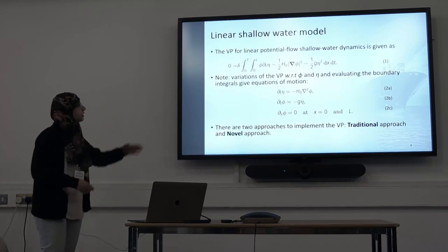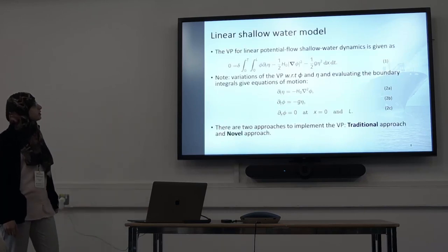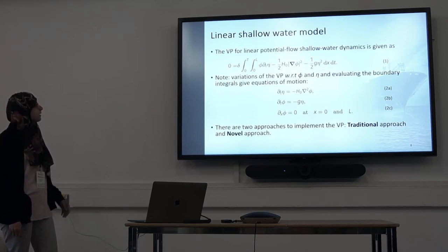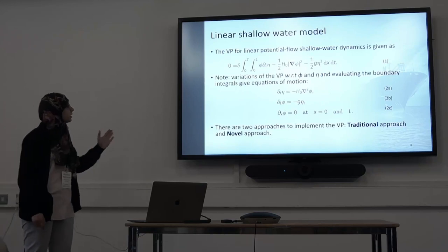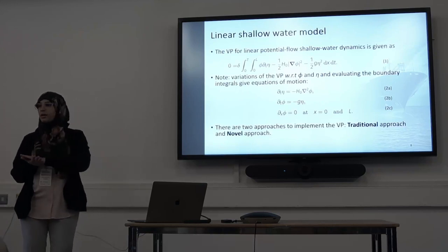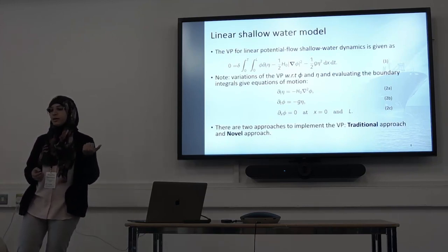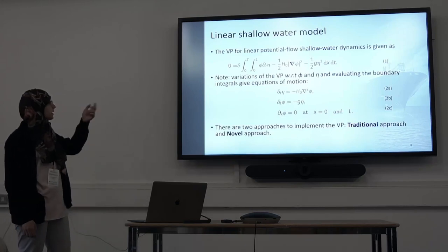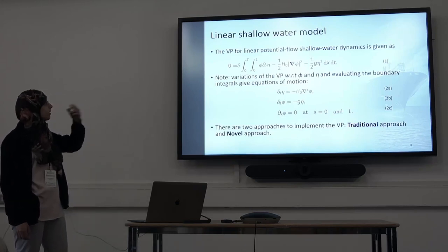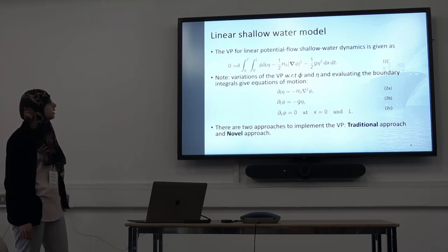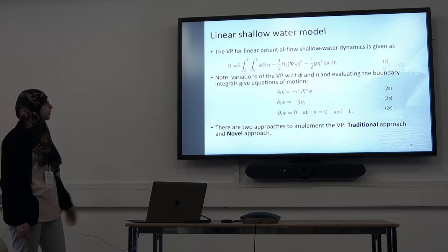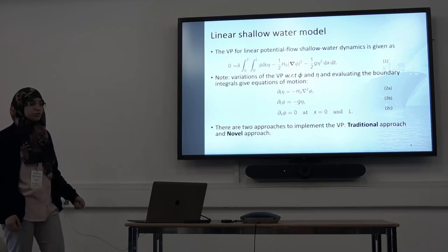Equation one shows the variational principle for linear shallow water equations, constructed to account for conservation of energy of the system. It also includes terms that satisfy the boundary conditions. When you take the variation of this variational principle, you obtain the equations of motion: the kinematic, dynamic, and boundary conditions at the end of the domain.